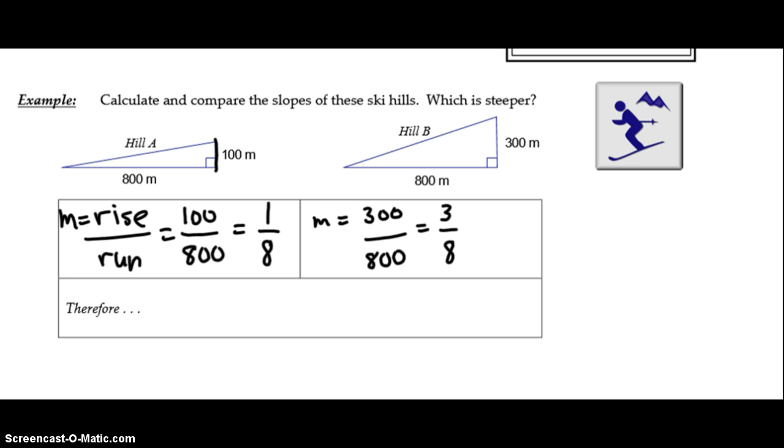Therefore which hill is steeper? Well hill A has a slope of 1/8. Hill B has a slope of 3/8 and 3/8 is greater than 1/8. Therefore hill B is steeper.